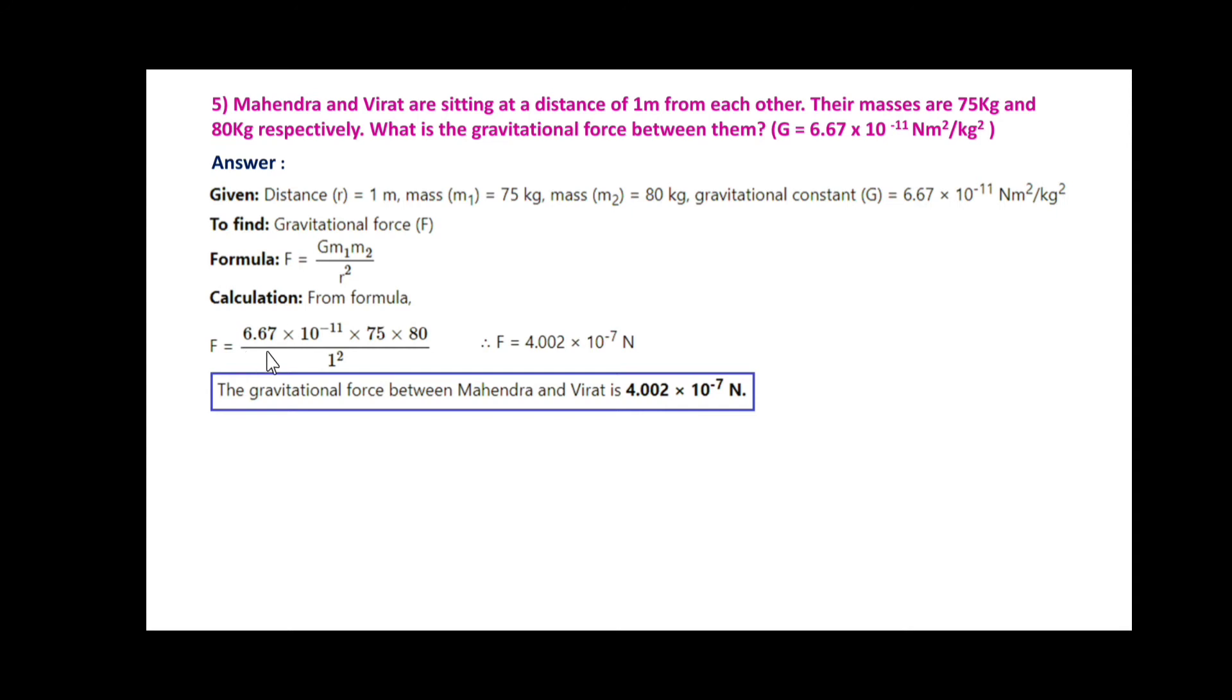We put the values: F = 6.67×10⁻¹¹ × 75 × 80 / 1². After solving this, F = 4.002×10⁻⁷ N. The gravitational force between Mahendra and Virat is 4.002×10⁻⁷ N.